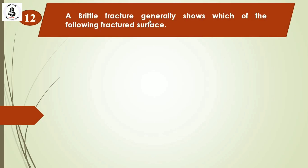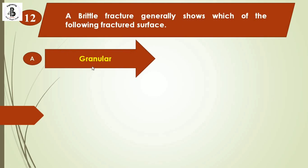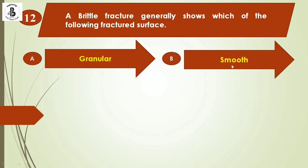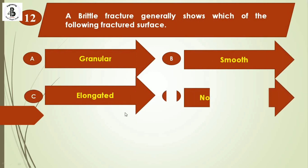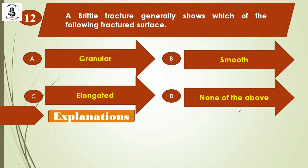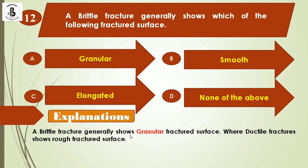Next question: A brittle fracture generally shows which fractured surface? Option A: granular surface. Option B: smooth surface. Option C: elongated surface. Option D: none of the above. In case of brittle fracture, it generally shows a granular fracture surface, while ductile fracture shows a rough fracture surface. If you join the brittle fractured surfaces back together, they will have almost the same dimensions as before. The right answer is option A.